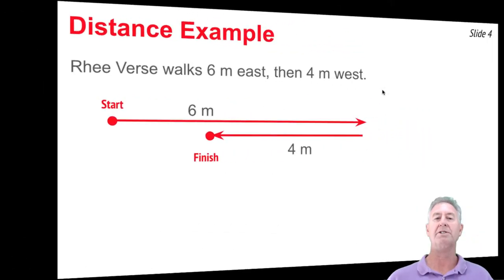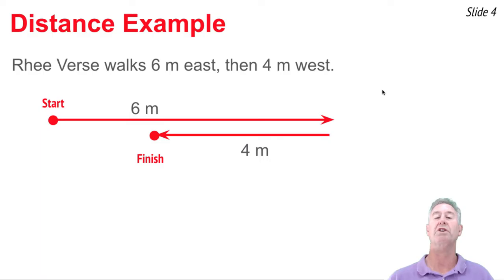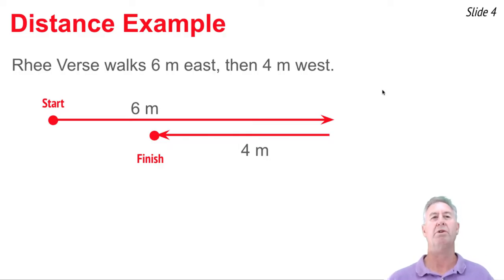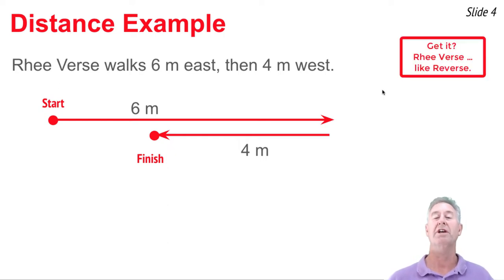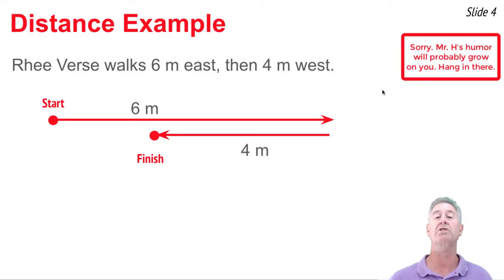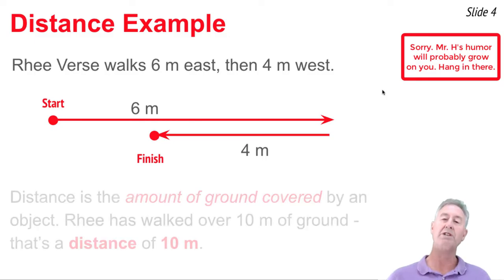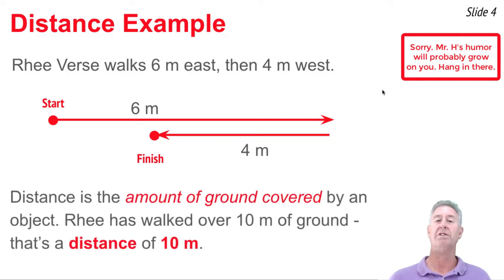Distance is a scalar, and because it's a scalar, it's going to ignore any sort of direction change. Here's an example: Rhi walks six meters east and then four meters west, and we want to know what's the distance. In trying to find the distance, we just need to know how much ground did Rhi walk over. Rhi walks six meters and four meters, and that sums up to a total distance of 10 meters.